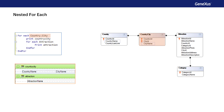Otherwise, a warning is displayed in the navigation list to inform the user that some attributes cannot be instantiated, because they can't be reached from the extended table of that foreach command. In this case, country name and city name belong to the extended table of country.city, the base table of the foreach command.